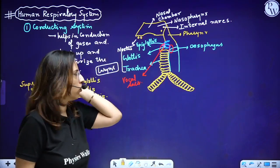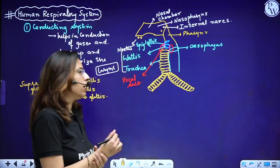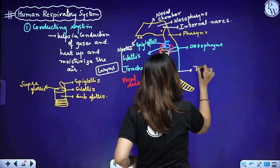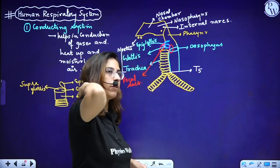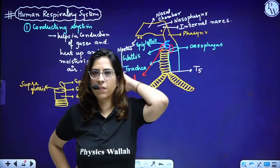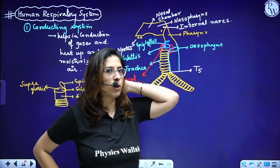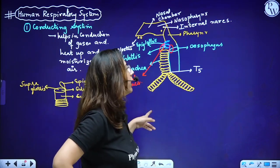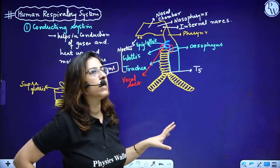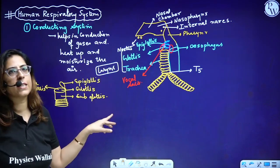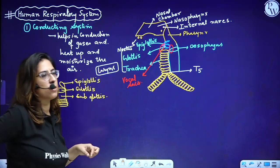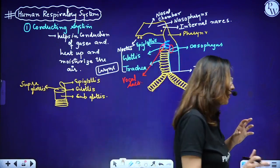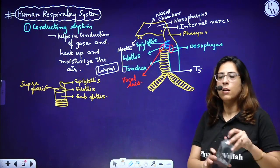So from now, hope you will not be confused about larynx. Now the trachea bifurcates and forms the bronchi. Each structure uses a different label. The bronchi, or bronchus as some books call it, further bifurcates to form a network of tubes.